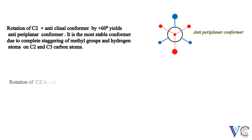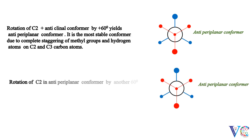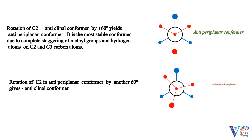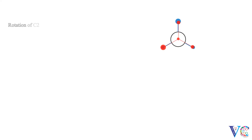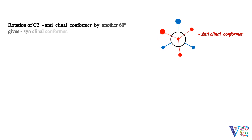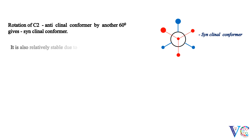Rotation of C2 in the anti-periplanar conformer by another 60 degrees gives the minus anticlinal conformer. This conformer is relatively unstable due to partial eclipsing. Rotation of C2 in the minus anticlinal conformer by another 60 degrees generates the minus synclinal conformer. It is also relatively stable due to partial staggering.